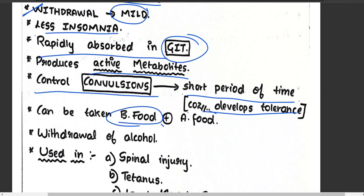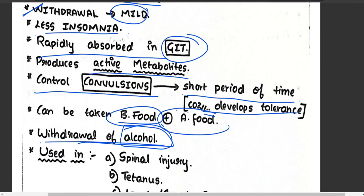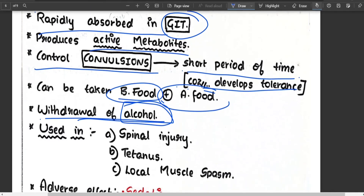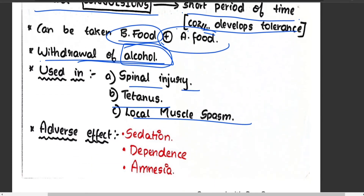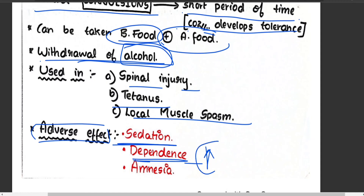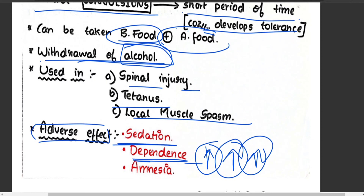Diazepam can be taken before or after food with no restrictions. It is used in alcohol withdrawal, spinal injury, tetanus, and skeletal muscle spasm. Adverse effects include sedation and hypnosis; dependence only occurs with excessive doses. Amnesia — inability to recollect past events — is another adverse effect.